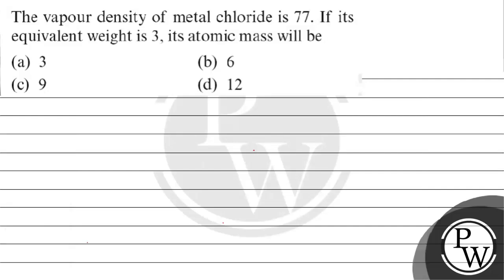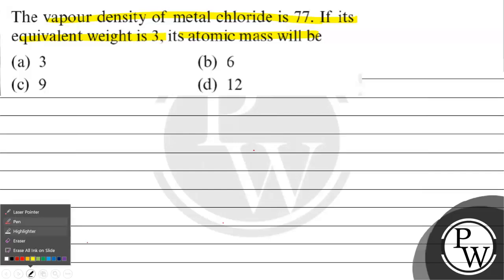Hello bachon, let's read this question. The question says vapor density of metal chloride is 77. If its equivalent weight is 3, its atomic mass will be: option a) 3, option b) 6, option c) 9, option d) 12.